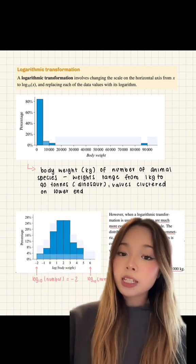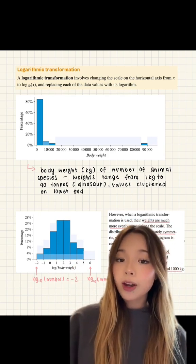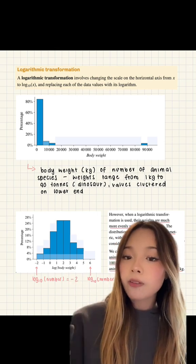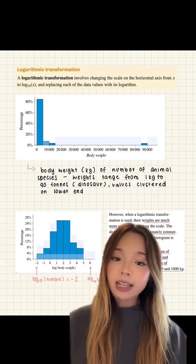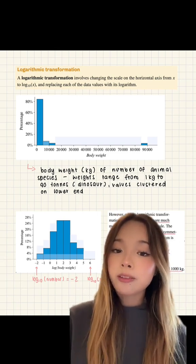We can now see that the percentage of weights of animals between 10 and 100 kilograms is very similar to the percentage of weights of animals between 100 and 1,000 kilograms. Therefore, this logarithmic transformation graph makes the values more readable and informative.